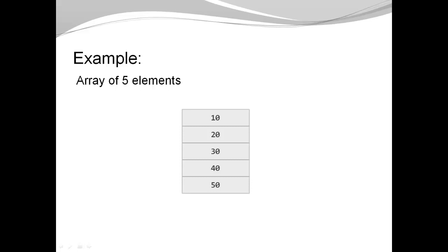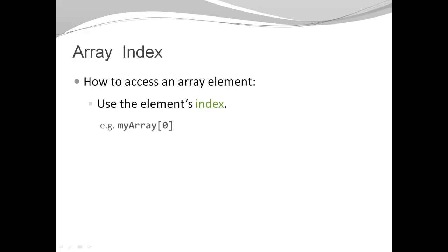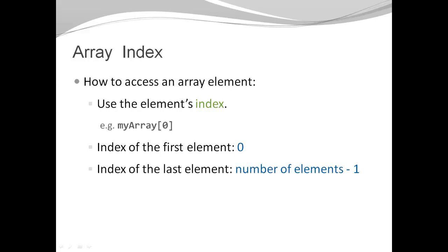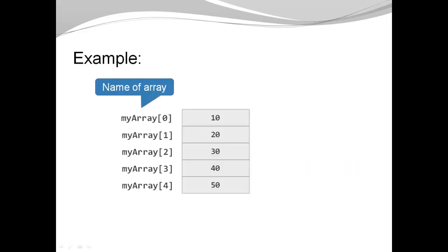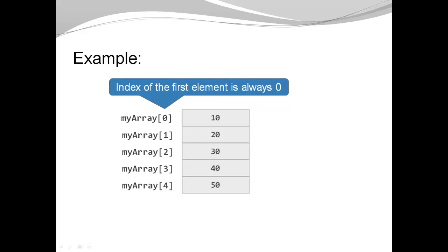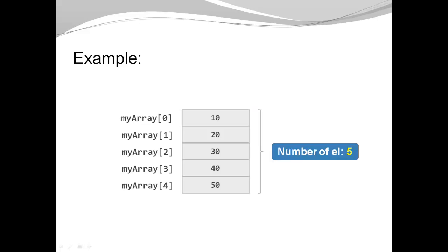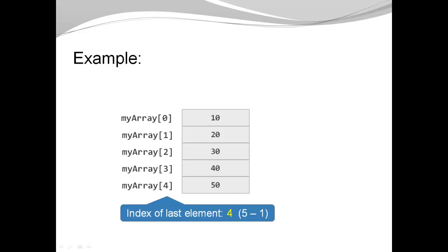Now that I have an array, I need to know how I can access those five elements. In Java, we access array elements with an index — rectangular brackets with the index number in between. The first element always has index zero. The last element has an index equal to the number of elements minus one. I gave my array the name myArray. I have a first element with index zero and a last element with index four, since four is five minus one.